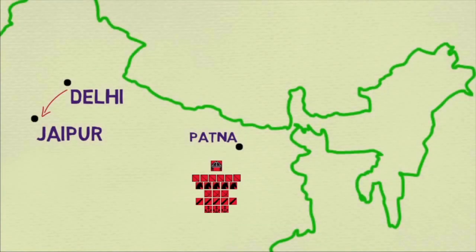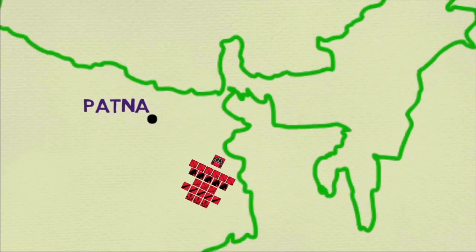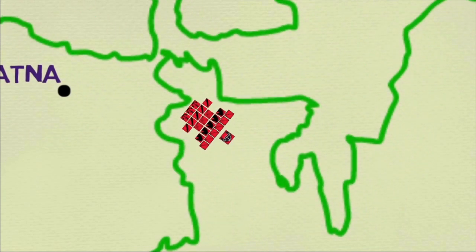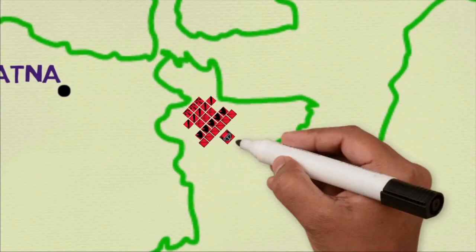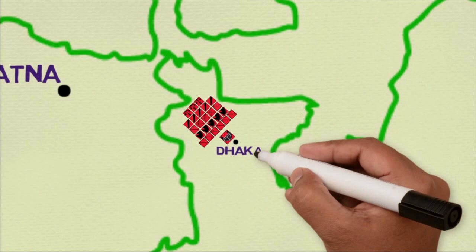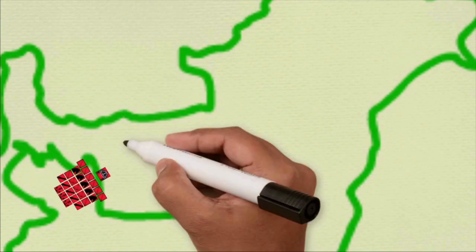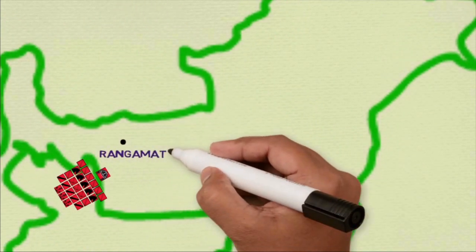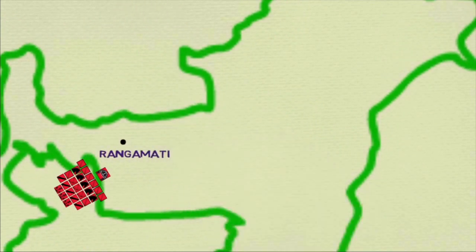The Nawab of Dhaka also contributed 2,000 additional troops to Ram Singh's force, bringing the total land forces under Ram Singh to 71,000. Ram Singh arrived at Rangamati, the frontier outpost of the Mughals at that time, in February 1669.